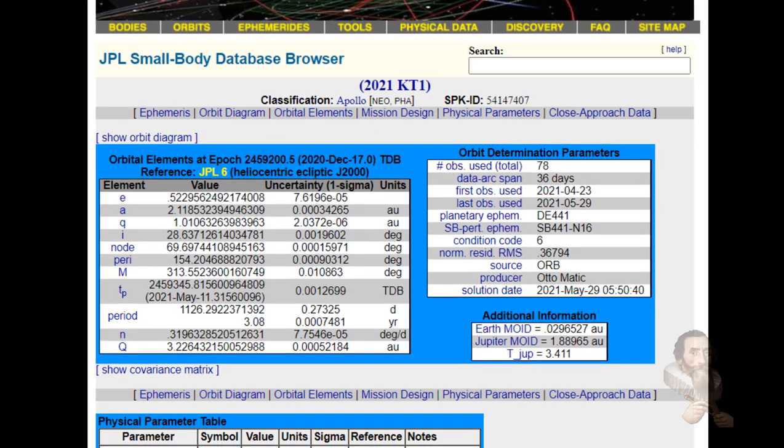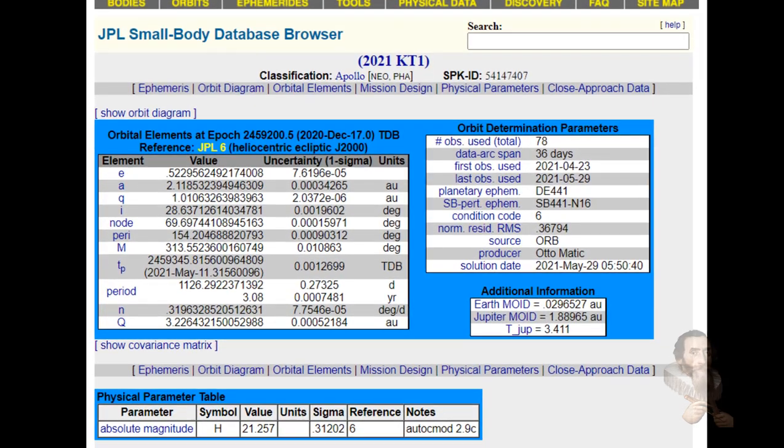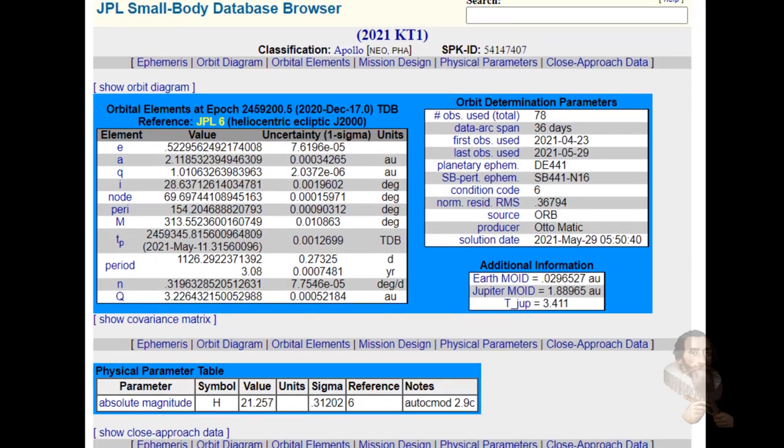It will fly past the Earth at a speed of roughly 40,000 miles per hour, which equates to 20 times faster than a speeding bullet.